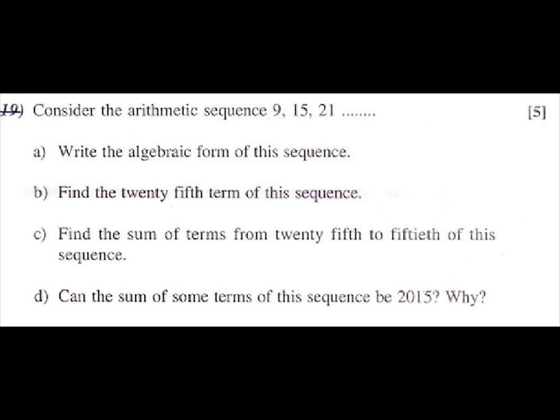19th question: Consider the arithmetic sequence 9, 15, 21. Part A: Write the algebraic form of the sequence. Part B: Find the 25th term of the sequence. Part C: Find the sum of terms from 25th to 50th of the sequence. Part D: Can the sum of some terms of the sequence be 1015? Why?